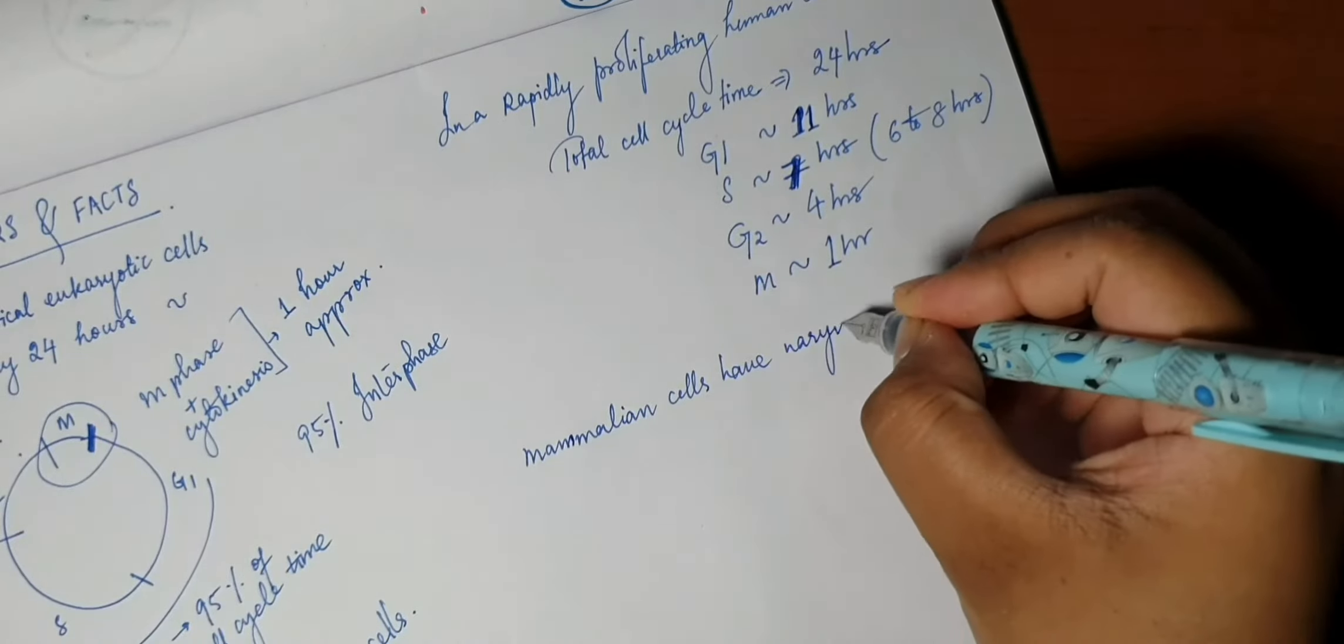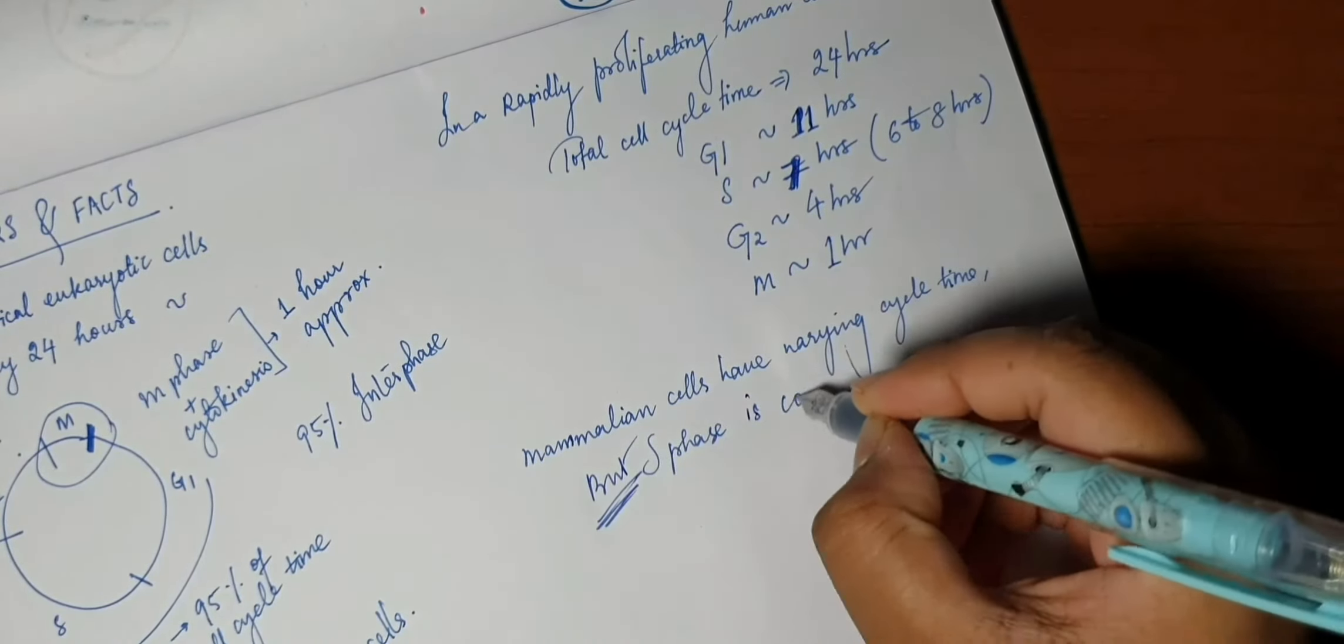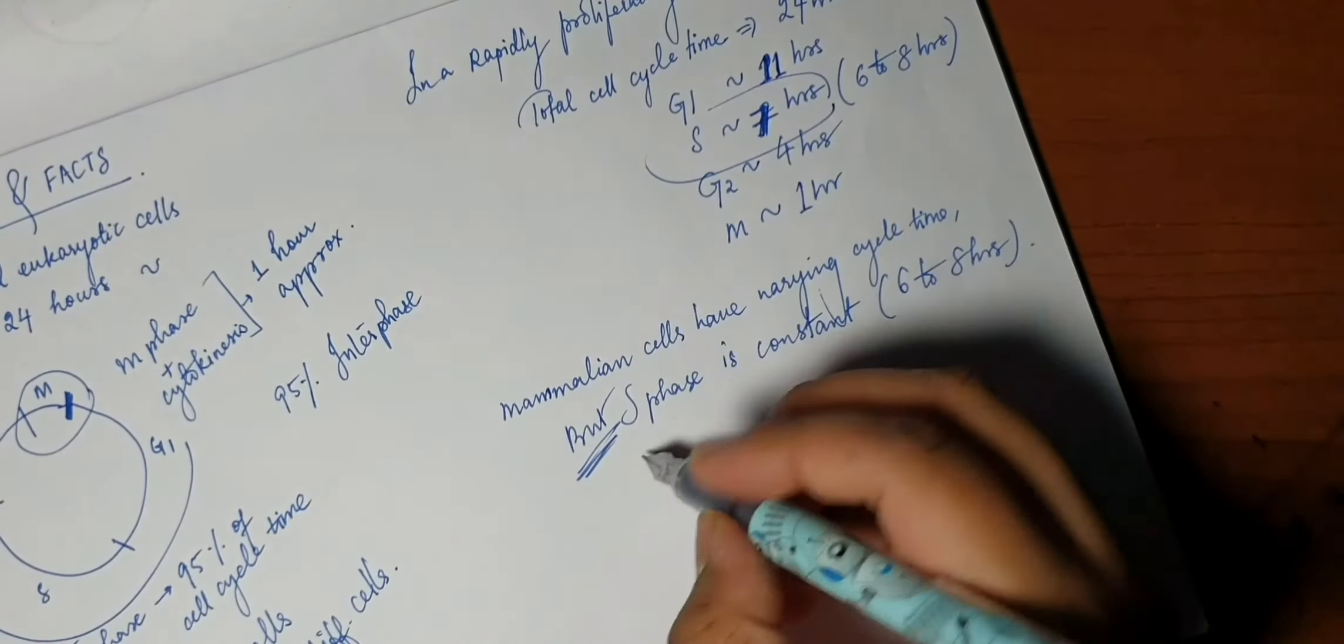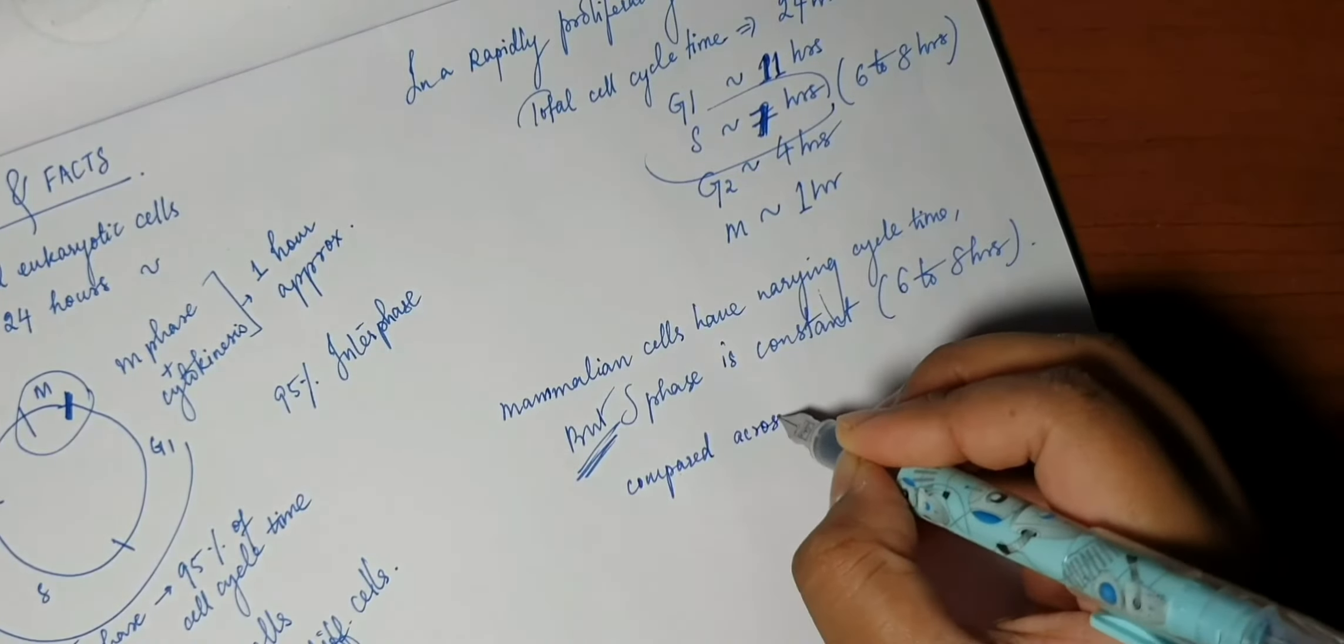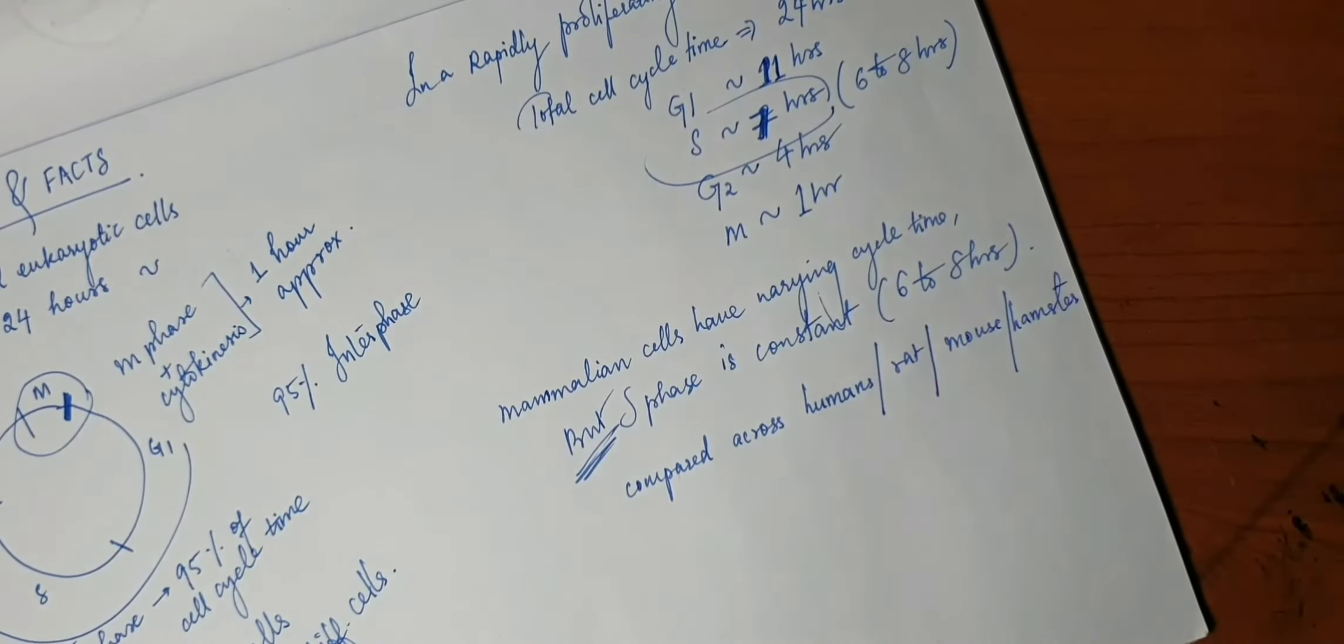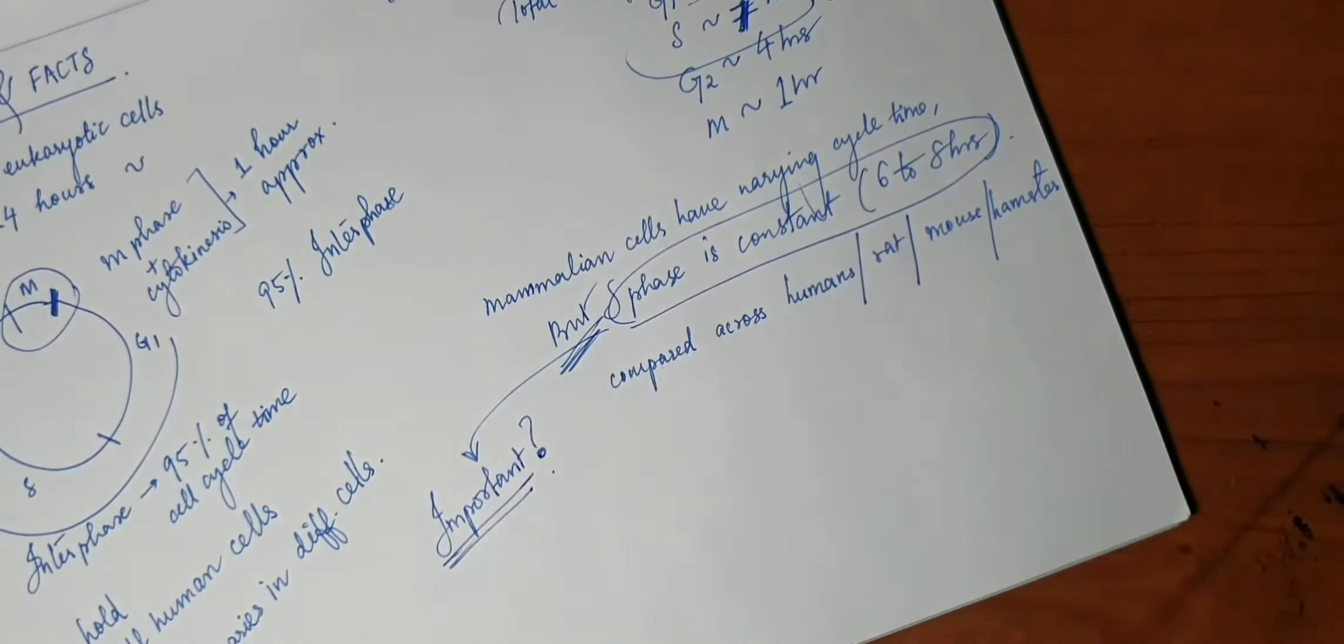All of the mammalian cells have obviously a different cell cycle time, but in all of these cells, the S phase was found to be constant, which is about 6 to 8 hours. This information is based on a study done in 1960 by comparing human, rat, hamster, and mouse cells.